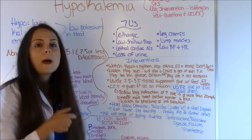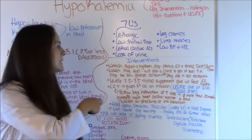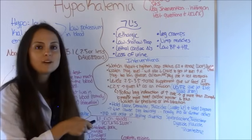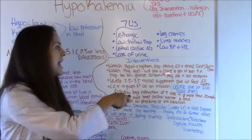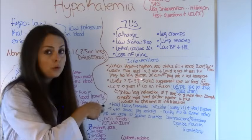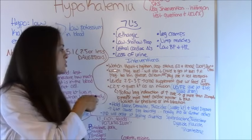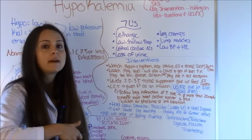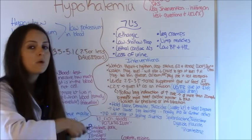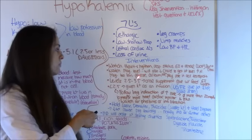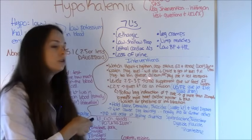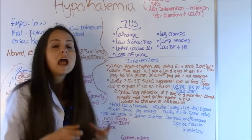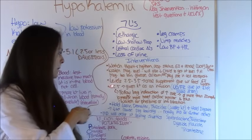Watch their magnesium because magnesium and potassium go hand in hand — they will usually both go down together. And if the magnesium level is too low, it will probably be hard to get that potassium level to go up, so the physician may order a magnesium level as well. And you'll want to watch the glucose, calcium, and sodium levels because all of that plays a role in cell transport.